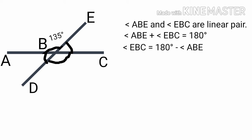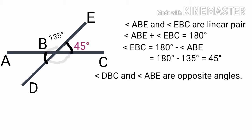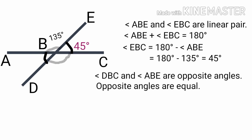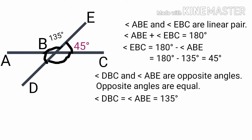Angle EBC is equal to 180 minus angle ABE, that is equal to 180 minus 135 degrees, that is equal to 45 degrees. Angle DBC and angle ABE are opposite angles and are equal. Angle DBC is equal to angle ABE, that is equal to 135 degrees.